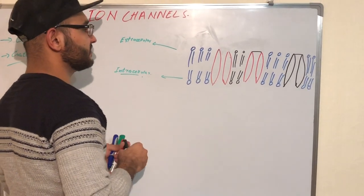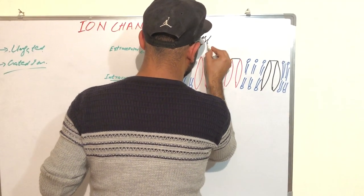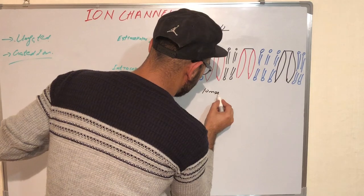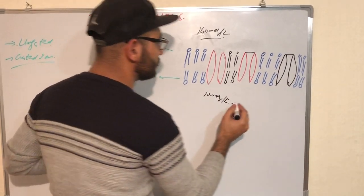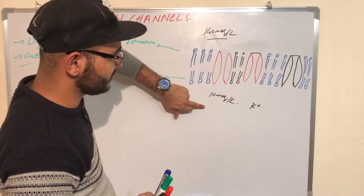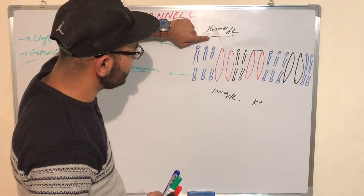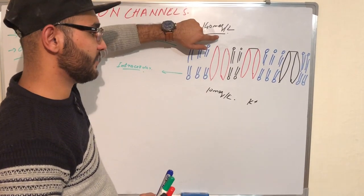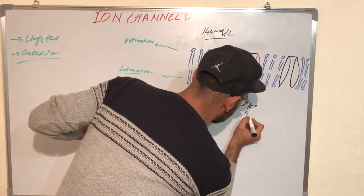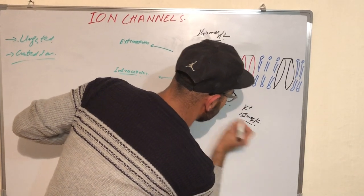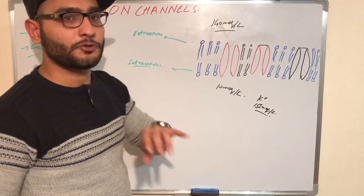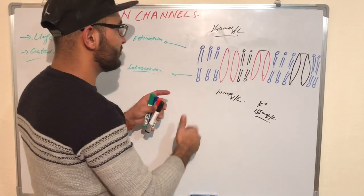The electrochemical gradient means that ions will diffuse from high concentration to low concentration. For example, sodium is at a high concentration of about 140 outside the cell membrane but only about 10 inside. So sodium will enter into the cell. Potassium is present at about 150 inside the cell membrane, so according to the electrochemical gradient, potassium will move from inside the cell membrane to outside.